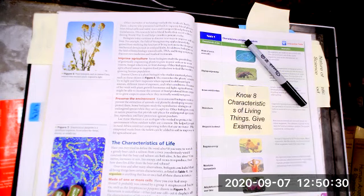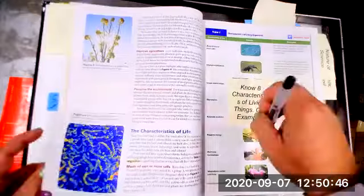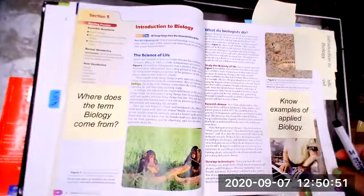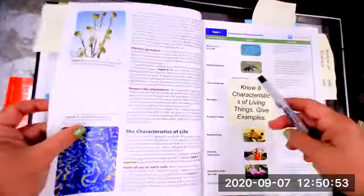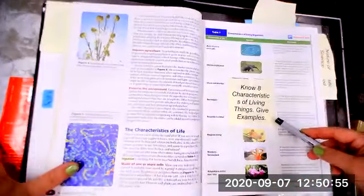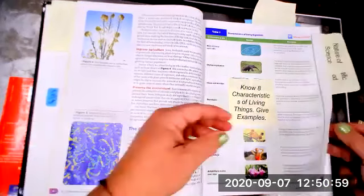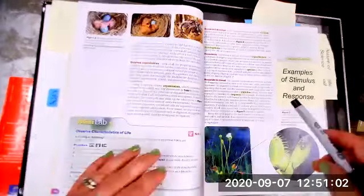By now you have these two sticky notes applied to pages four and five, and you should know the eight characteristics of living things and be able to give examples. Let's turn to page eight.